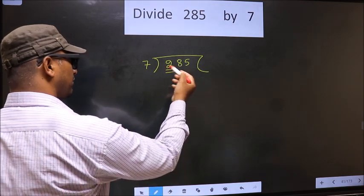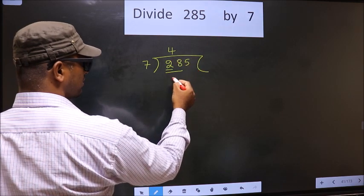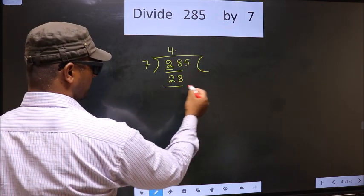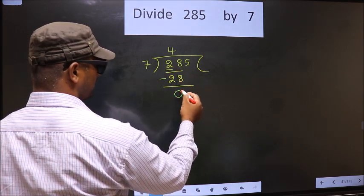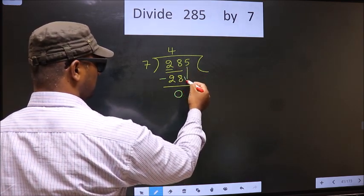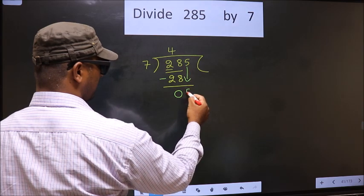When do we get 28 in 7 table? 7 fours, 28. Now you subtract. 28 minus 28, 0. Now you bring down the beside number, that is 5 down.